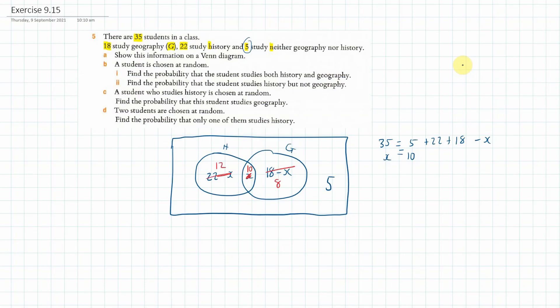Now once we've got that, we are going on to Part B where we've got to show the probability that a random student studies both History and Geography. Well that's obviously this 10 number here. They're studying both. So it's 10 out of 35 students in this class. Well, 5 goes into both, so we could say 2/7.